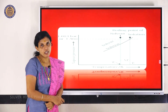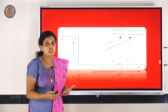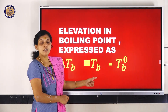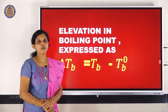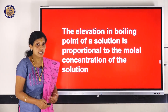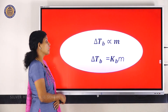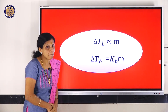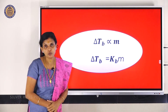Delta Tb represents elevation in boiling point — that means, by adding a non-volatile solute, how much the boiling point has increased. It is calculated by the equation: delta Tb = Tb − Tb⁰. Experimentally, it is found that the elevation in boiling point, delta Tb, is directly proportional to the molality of the solution. So delta Tb is directly proportional to small m (molality), and we write: delta Tb = Kb × m.